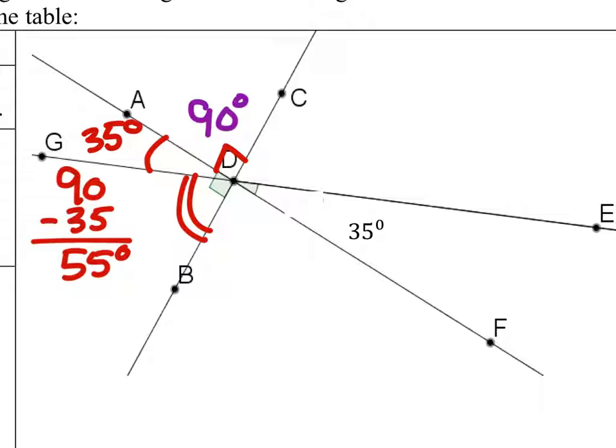And from that, this is great because we can see now that angle CDE is vertical to angle GDB. So it also is 55 degrees.